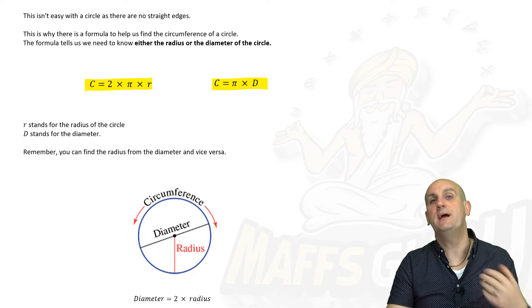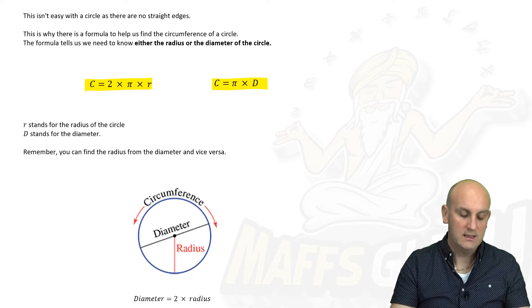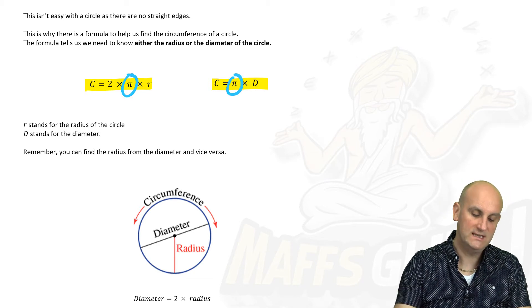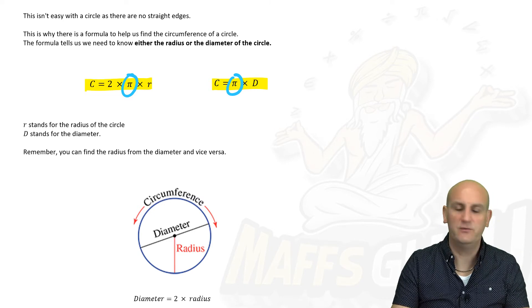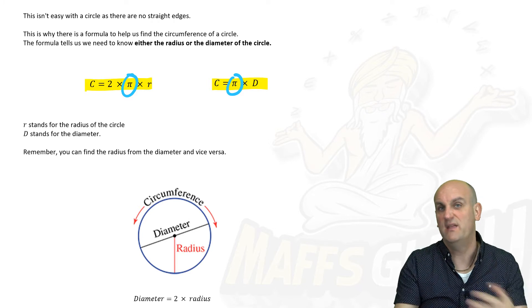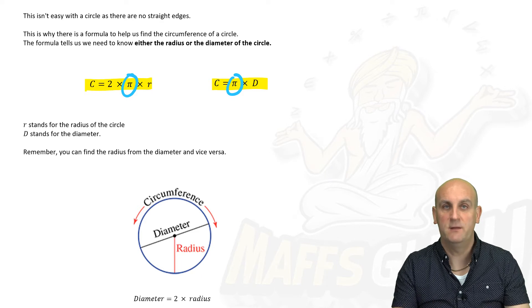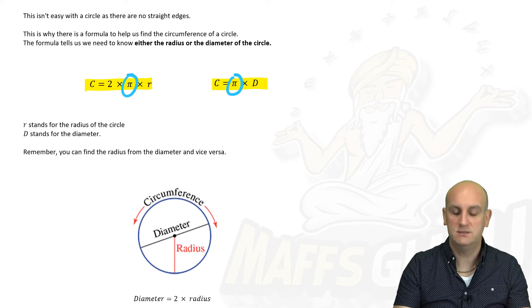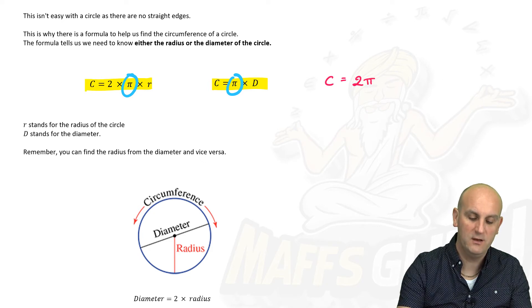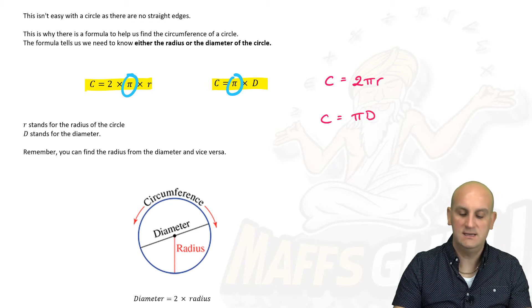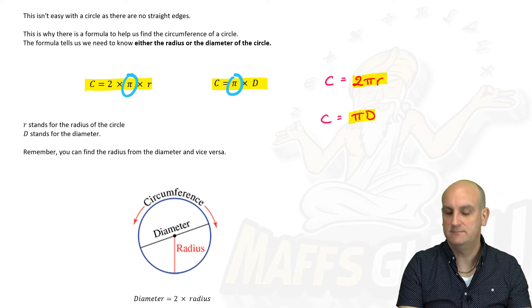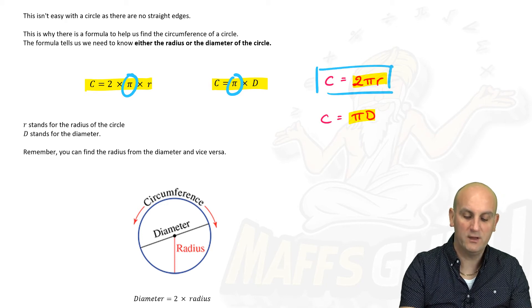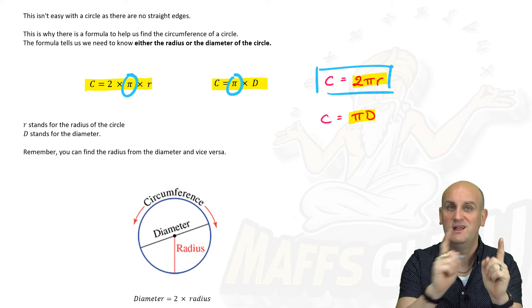Here are two formulas. C equals — now in maths, C stands for circumference. The first formula is C = 2πr and the second is C = πd. R stands for the radius and D stands for the diameter. Pi is a ratio — someone worked out that there is a link between the circumference of a circle and its radius and diameter, and that thing is called pi. There's a pi button on your calculator. In many cases I tend to use the first formula, C = 2πr, all the time because if they've given me the diameter I can find the radius, since the diameter is two lots of the radius.